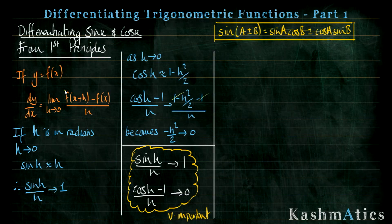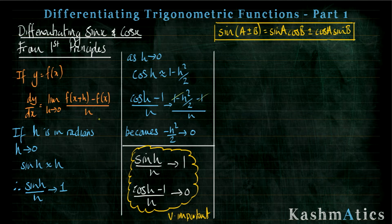Now the first thing I'm going to show you how to do is how to differentiate sine x and cos x from first principles, but before I do that I need to go over one or two things. Over here in orange we've got the standard way of differentiating something from first principles: dy by dx is equal to the limit as h approaches zero of f of x plus h, take away f of x, all over h — and hopefully you've seen that in year one.